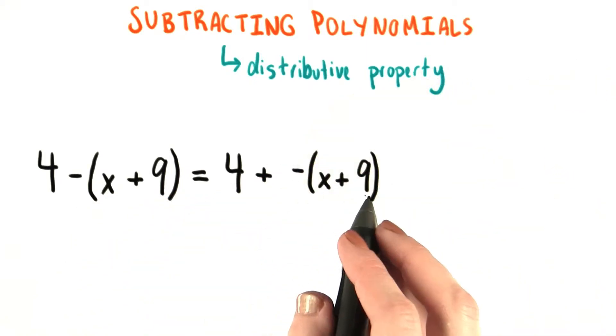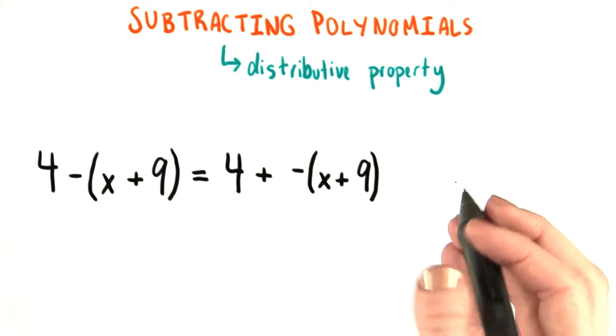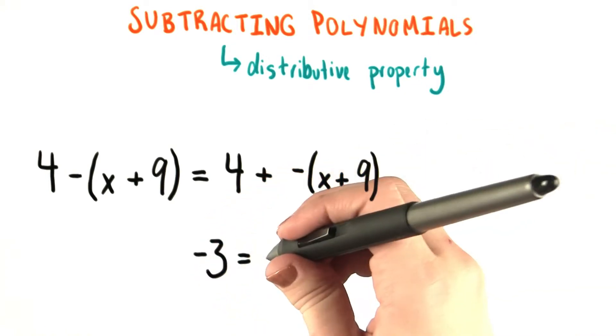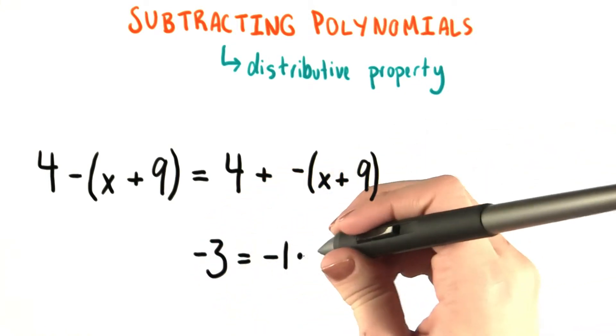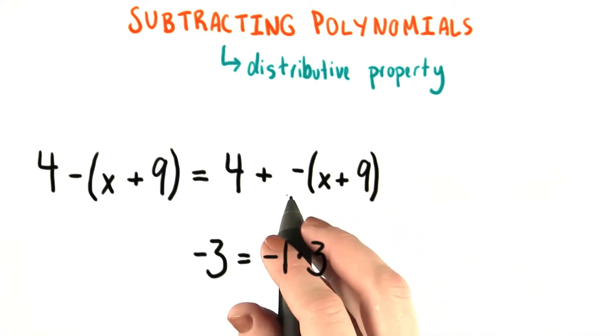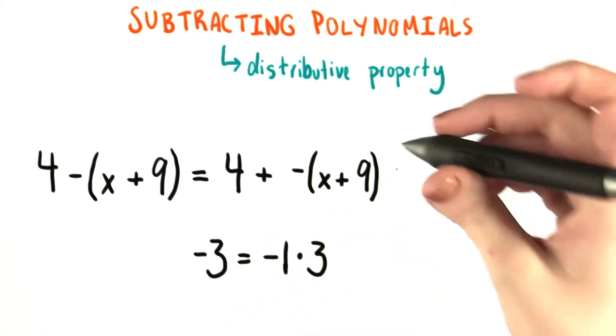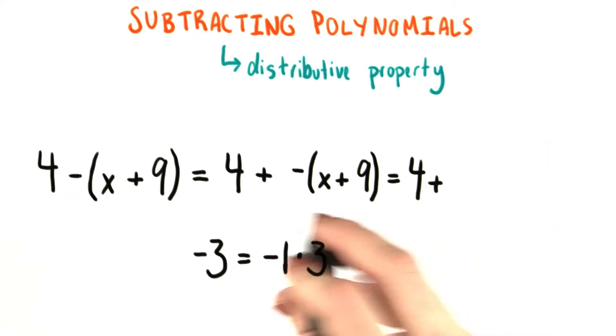However, when we're taking the negative of something, what we're really doing is multiplying it by negative 1. So in order to get negative 3, we actually have to say negative 1 times positive 3. So that means that if we want negative x plus 9, we actually need negative 1 times x plus 9.